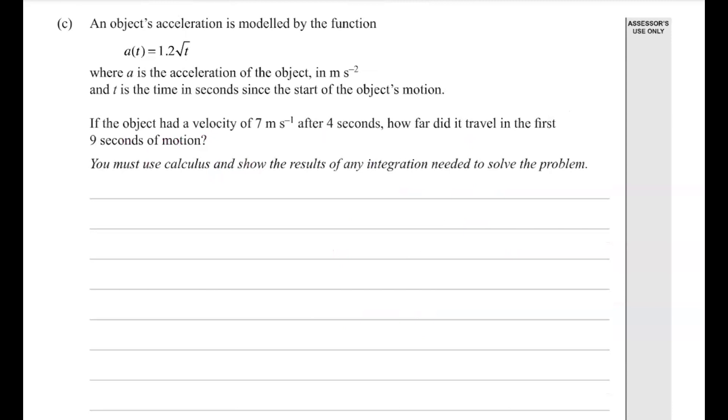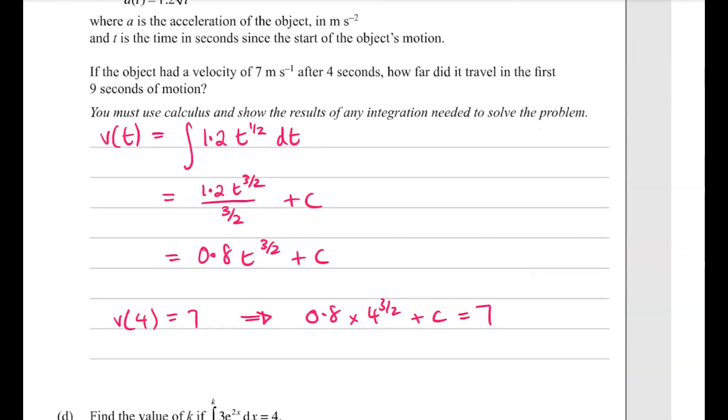Part c is a kinematics question. If you integrate acceleration, you'll get velocity. So if we want the velocity, we need to integrate our function of 1.2 times the square root of t. And the velocity at t = 5 by the third gives us c is 1.